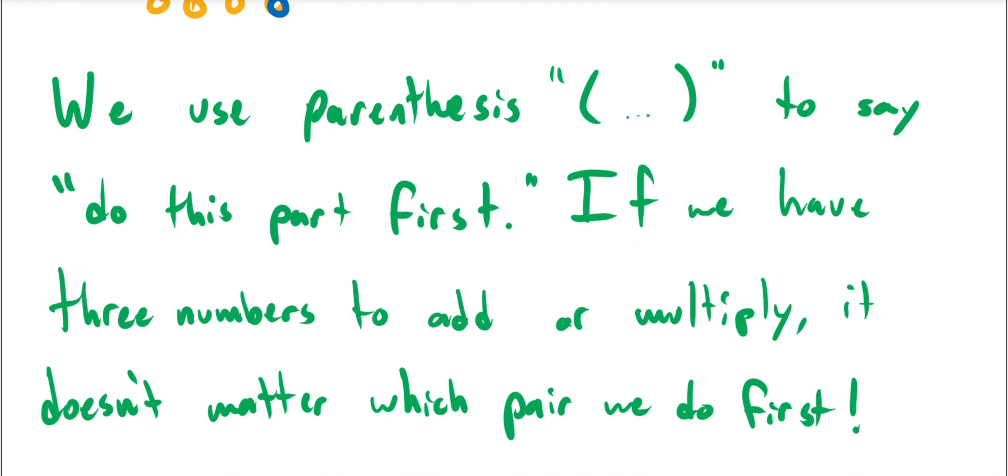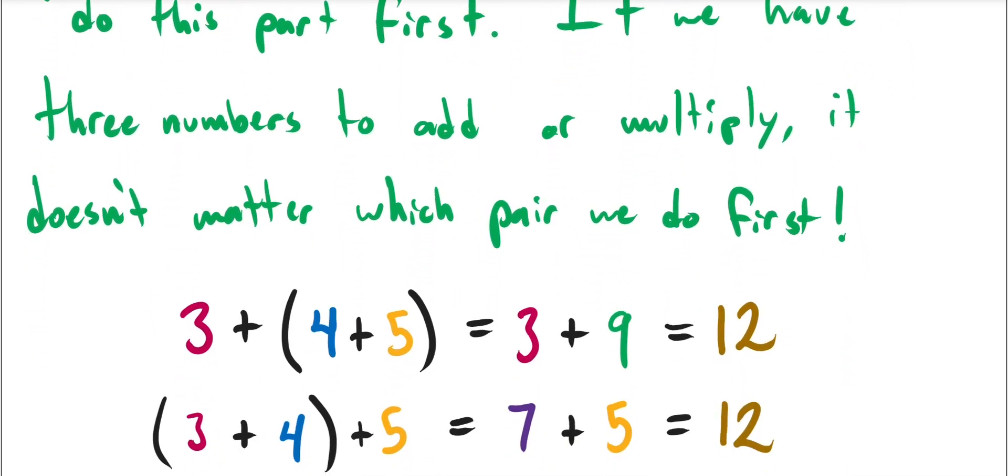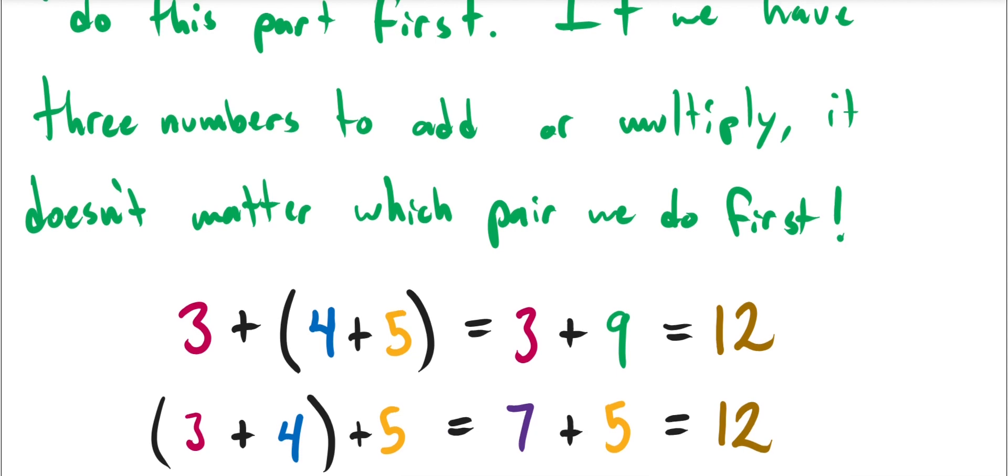Now, when you see parentheses in math, this is usually used to say, hey, consider this part first or do this part first or look at this part in isolation. If we have three numbers to add or multiply, then actually we can use parentheses to explain that it doesn't really matter which pair we do first. So for example, for addition, if I have three plus four plus five, and I do the four plus five part first, I get nine, and three plus nine is 12. Or if I do the three plus four part first, I get seven, seven plus five is 12. And so it didn't matter which of those pairs I started with. So this is what we call associativity.